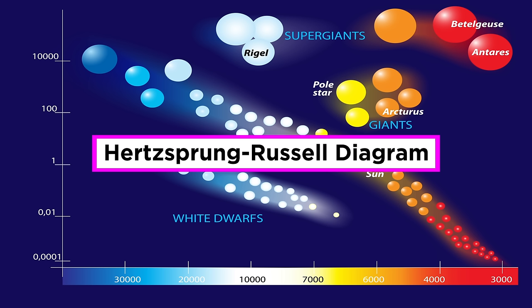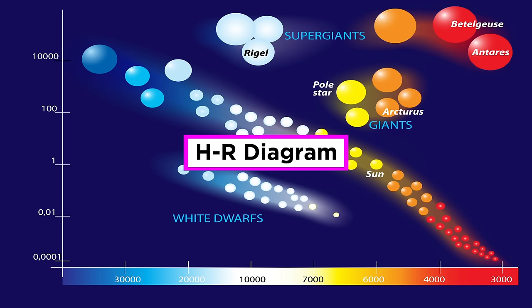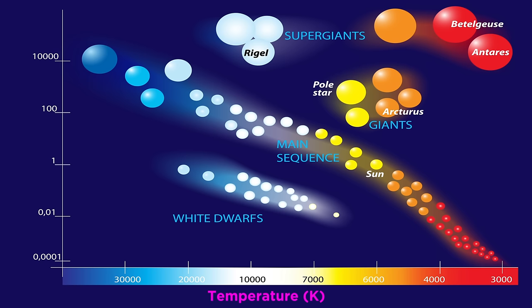All of this data regarding temperature and luminosity, as well as indirect information on mass and radius, can be represented on something called a Hertzsprung-Russell diagram, or an HR diagram for short. In this diagram, the horizontal axis shows temperature decreasing to the right, and the vertical axis shows luminosity, or the amount of energy emitted by a particular star per unit time, increasing going up.